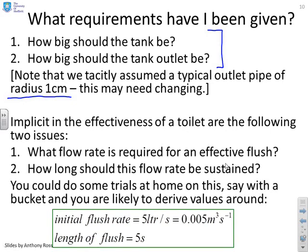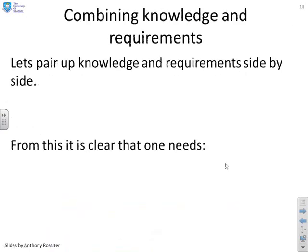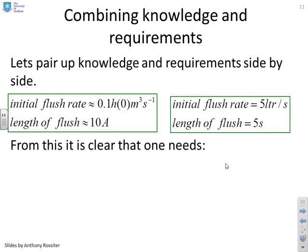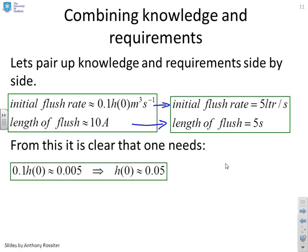Now, what I'm going to suggest, and again, this is an approximate, you could do this yourself, that an initial flush rate something of the order of five liters per second and a length of flush of the order of five seconds is not going to be a long way away from what you want. You can disagree if you like. It doesn't really matter because we're illustrating a process here. So the initial flow rate is going to be 0.005 meters cubed per second. Now, what I can do is pair up the knowledge I know about tank systems and the requirements I've got for the toilet to be effective. So the initial flush rate was 0.1H0 meters cubed per second and the length of flush was 10a. But we also know that we want the initial flush rate to be 5 liters per second and the length of flush to be 5 seconds. So if I put these two formulas together, what you find is this. 0.1H0 must be 0.005. Or in other words, H0 is 0.05. Now that's in meters, which gives you 5 centimeters.